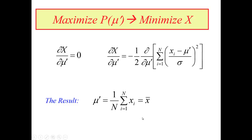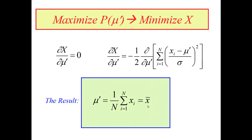This might seem pointless since we already knew the result, but back in our initial study of error analysis we only assumed that the mean value is the best estimate of the parent population mean. Now we have a much more formal and rigorous justification: the mean of our sample set is most likely to be the mean of the true parent population.